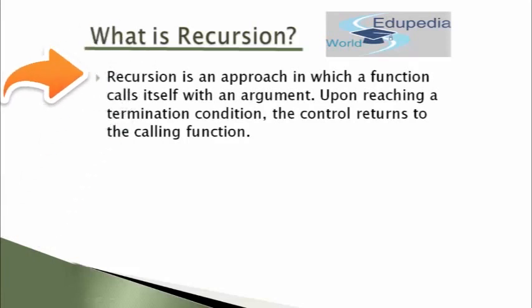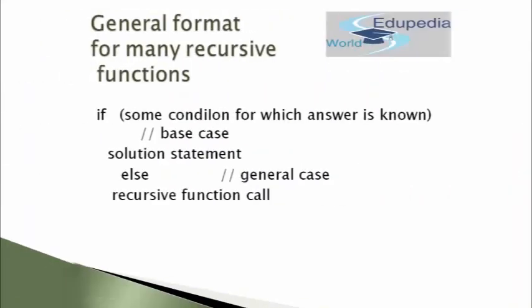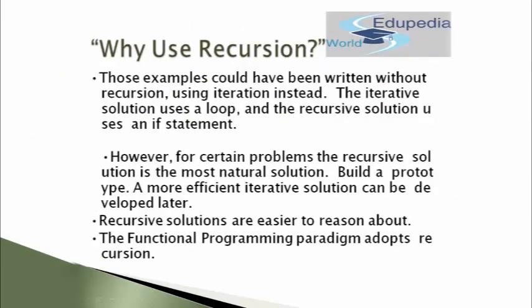Another definition says recursion is an approach in which a function calls itself with an argument. Upon reaching the termination condition, the control returns to the calling function. This is the general format for many recursive functions. There is an if statement with a condition — this is the base case, which provides the solution statement to execute. Otherwise, we have the general case, which calls the recursive function itself. The if condition creates a break for the recursive function: if the condition becomes true, the recursive call breaks; otherwise it keeps calling the same function recursively.